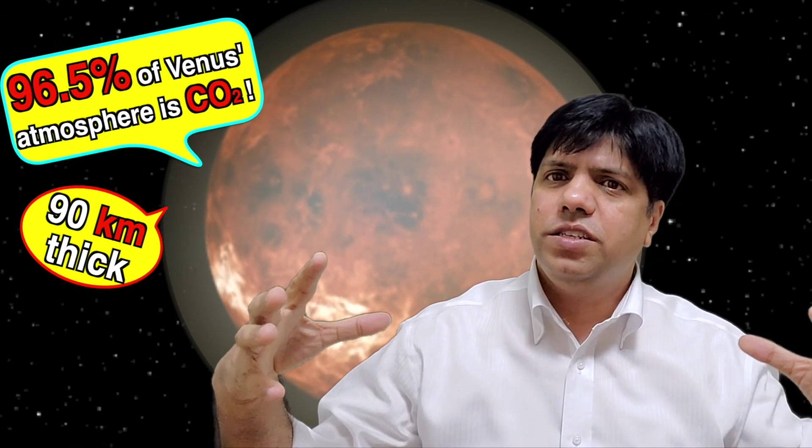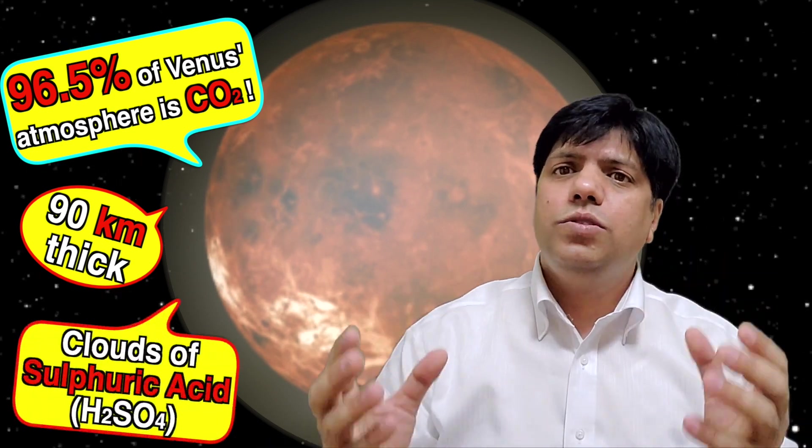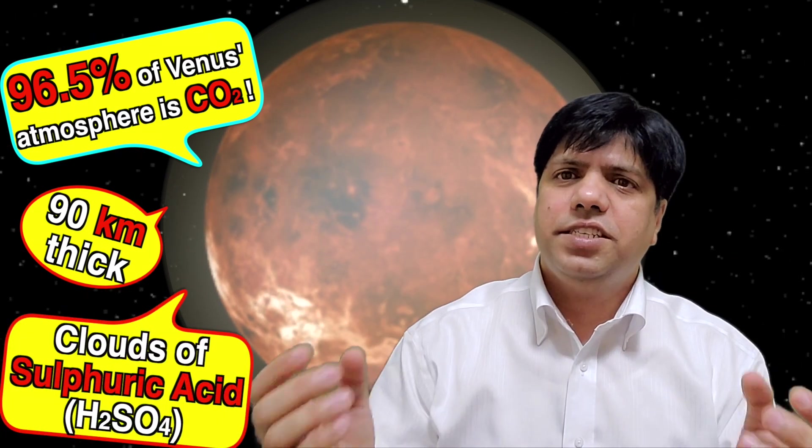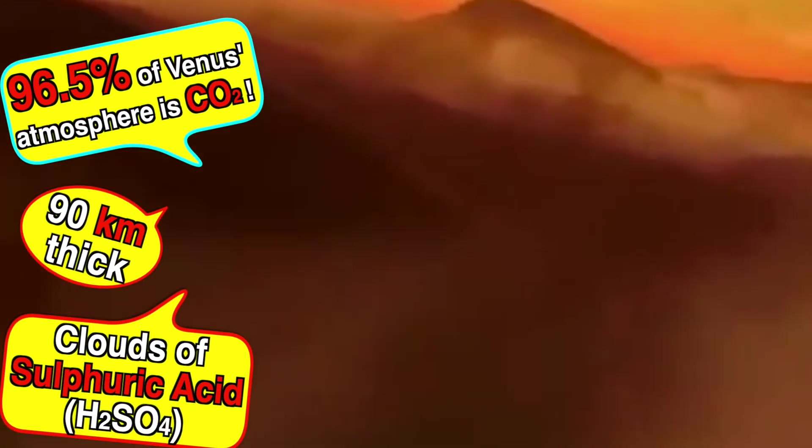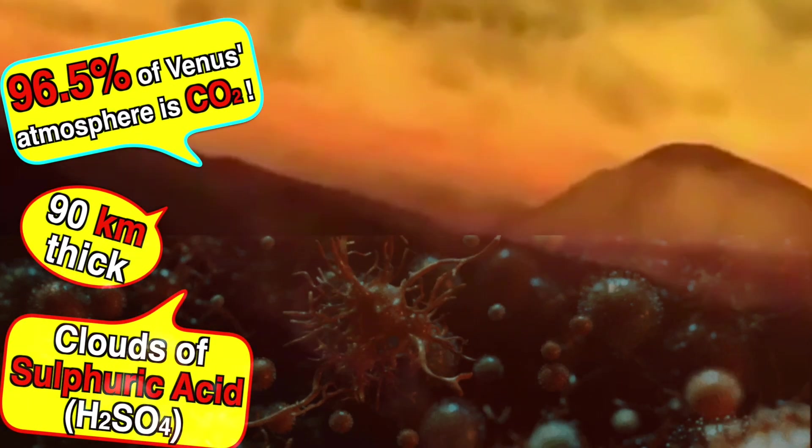Very thick atmosphere about 90 kilometers in thickness, 96.5% is carbon dioxide and the clouds are made of sulfuric acid very very acidic. So life on the surface of this planet is not possible.